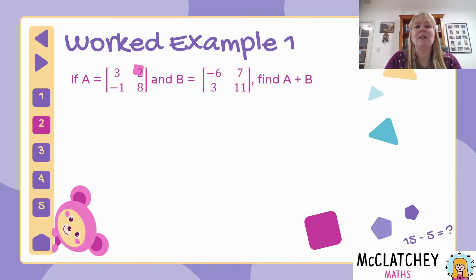Let's look at a quick worked example. We've got a matrix A, which has got four elements in it, and matrix B, also four elements. Notice that they're both square matrices, two rows, two columns. So they can be added to one another because they are of the same order. We need to find A plus B.